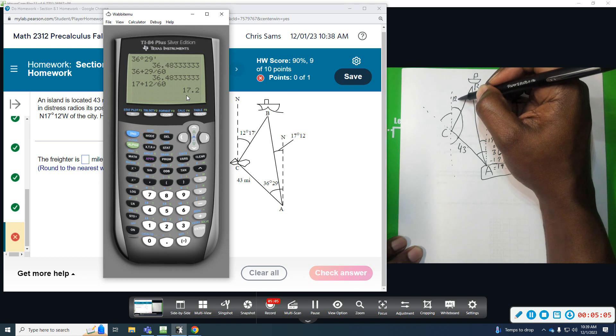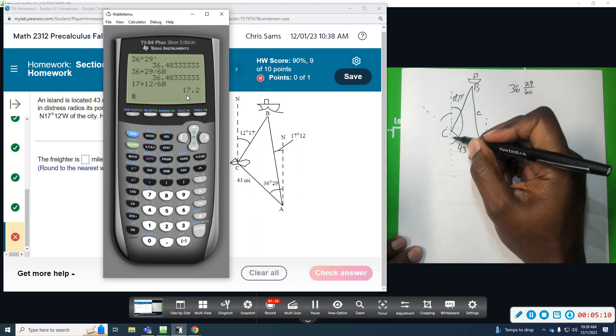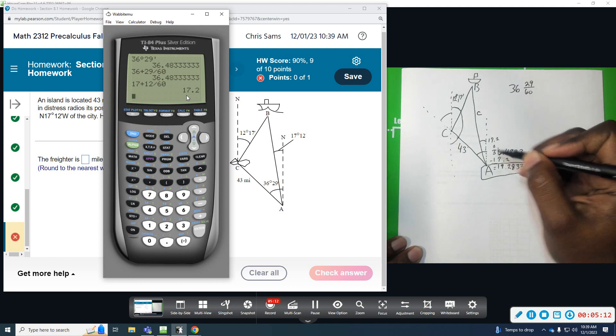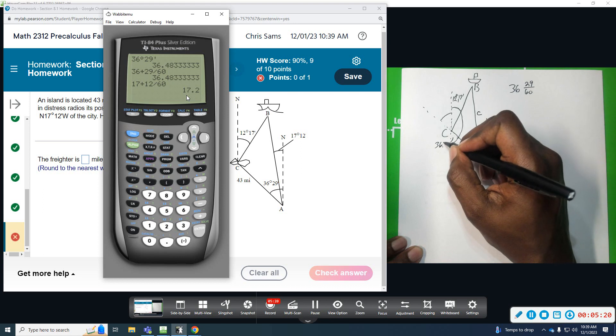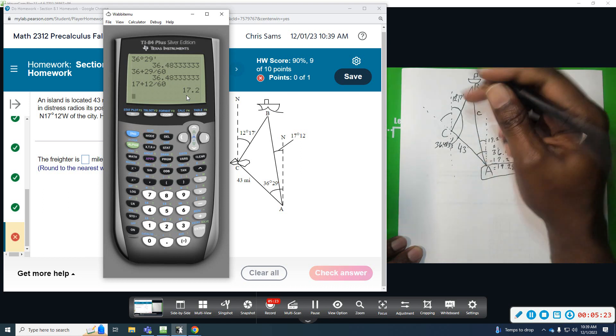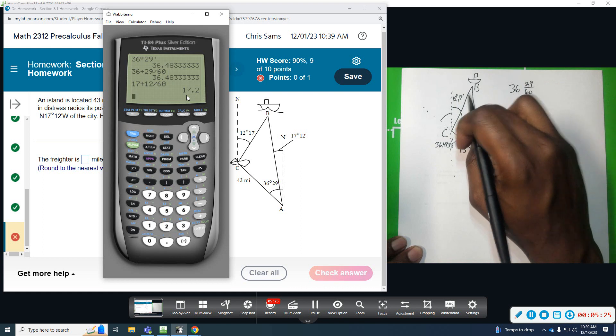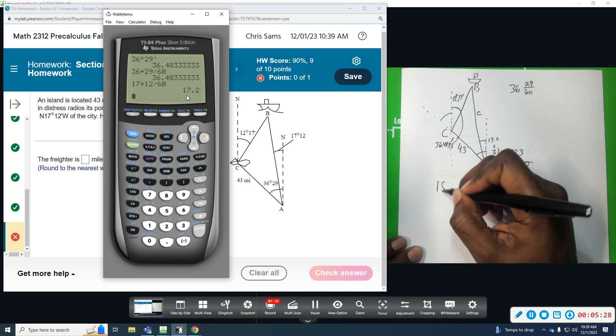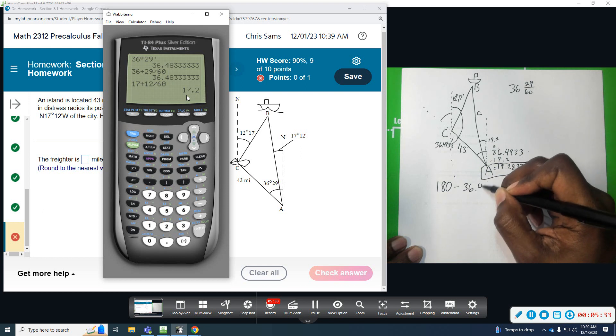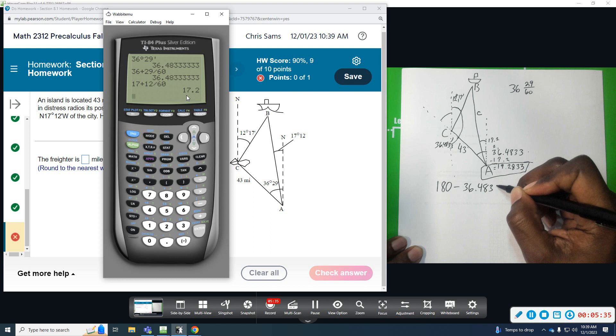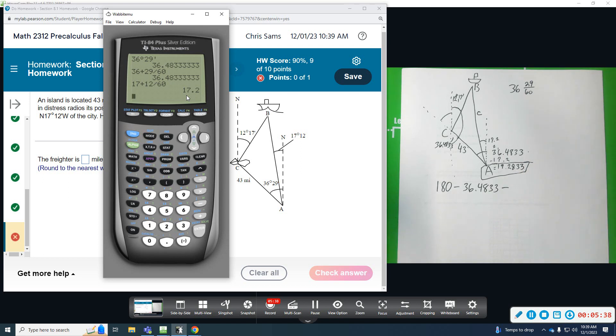And this angle down here, which we were given, is 36.4833. So, if I subtract these two from 180, that will give me angle C. So, I'm going to say 180 minus the 36.4833, and then minus, I've got to convert it to 12 degrees and 17 minutes.